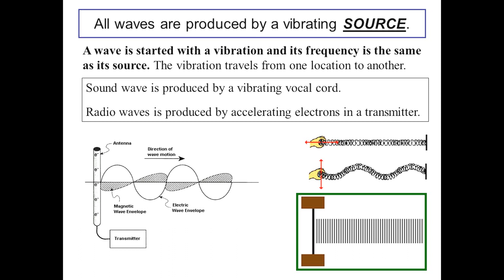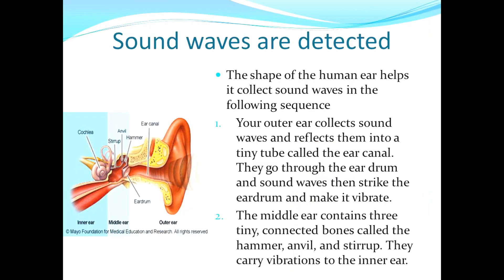The vibration travels from one location to another. Sound wave is produced by a vibrating vocal cord. Radiant wave is produced by accelerating electrons in a transmitter. Sound waves are detected through the shape of the human ear, which helps collect sound waves. Your outer ear collects sound waves and reflects them into a tiny tube called the ear canal, and sound waves then strike the eardrum and make it vibrate.